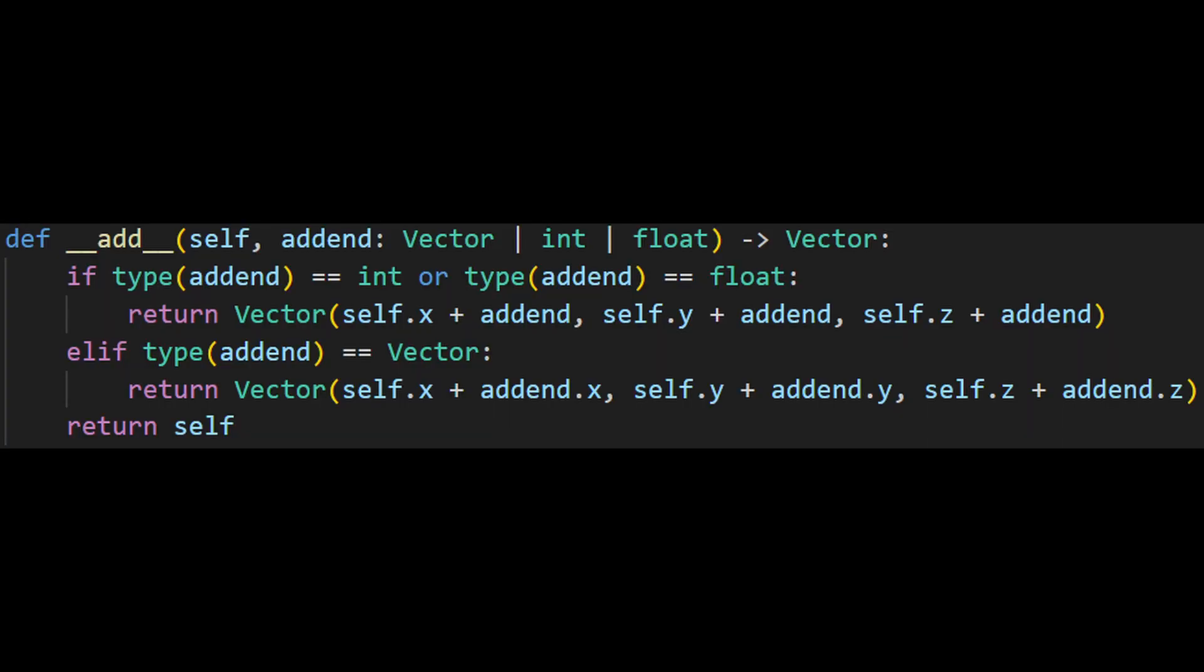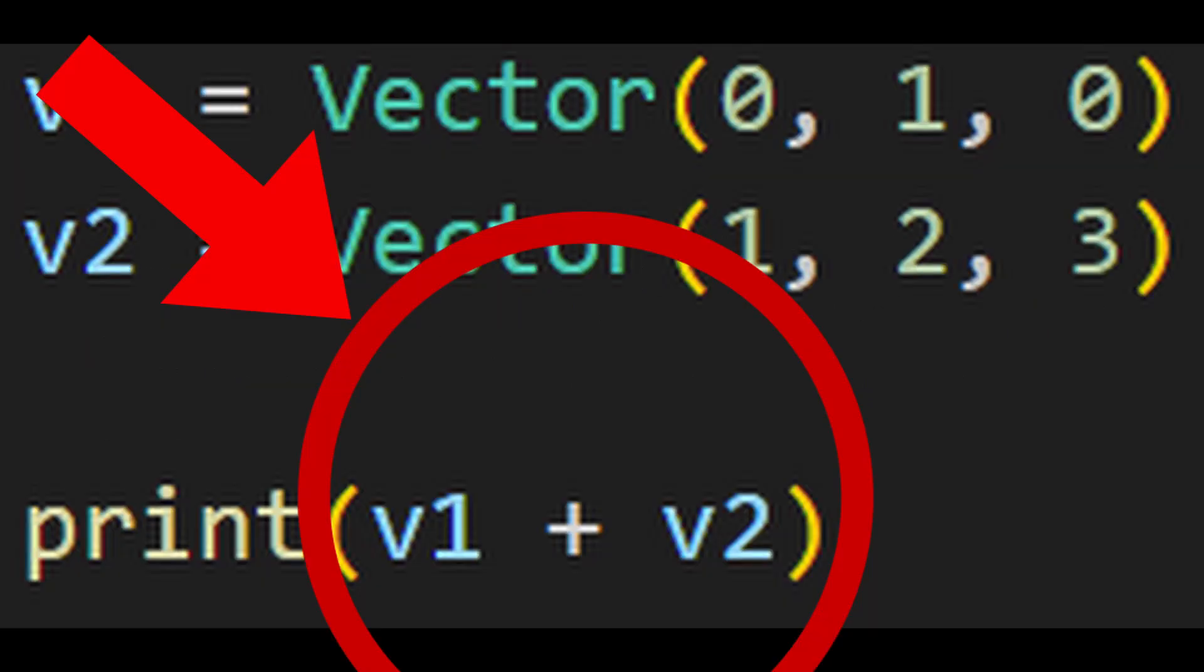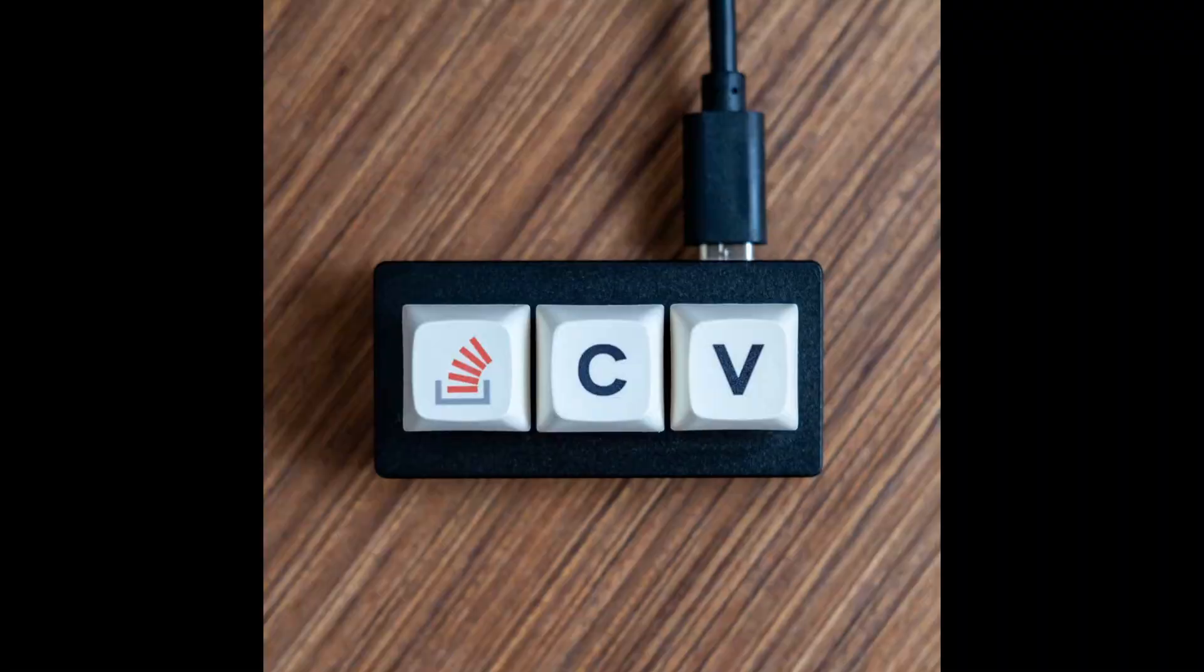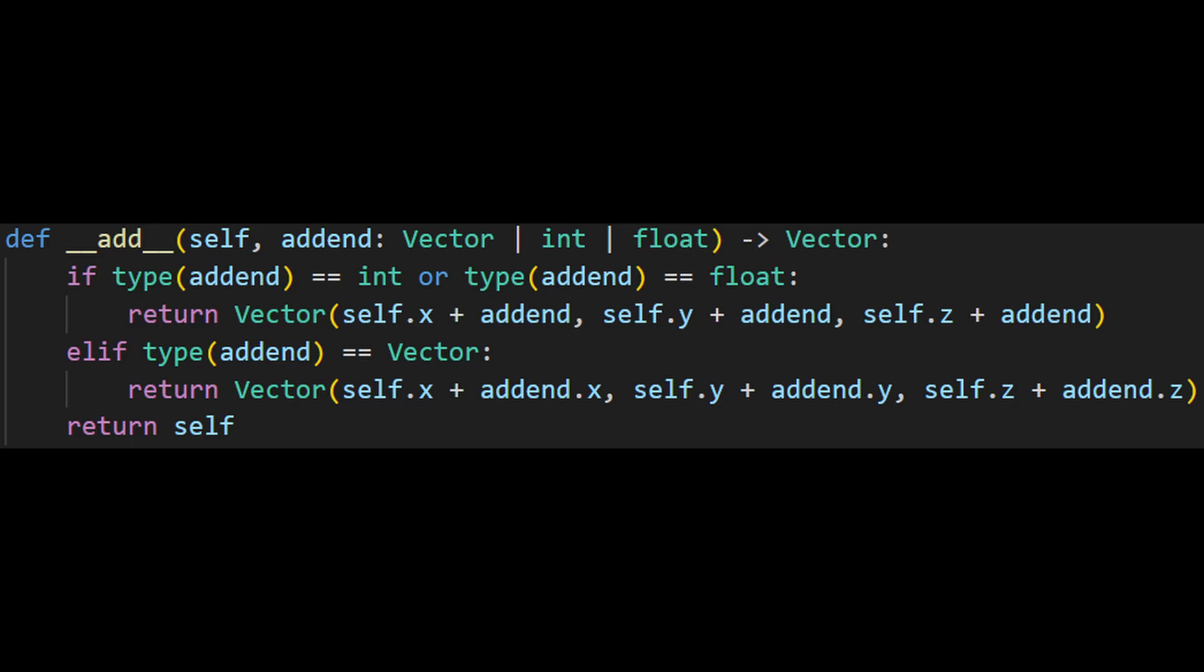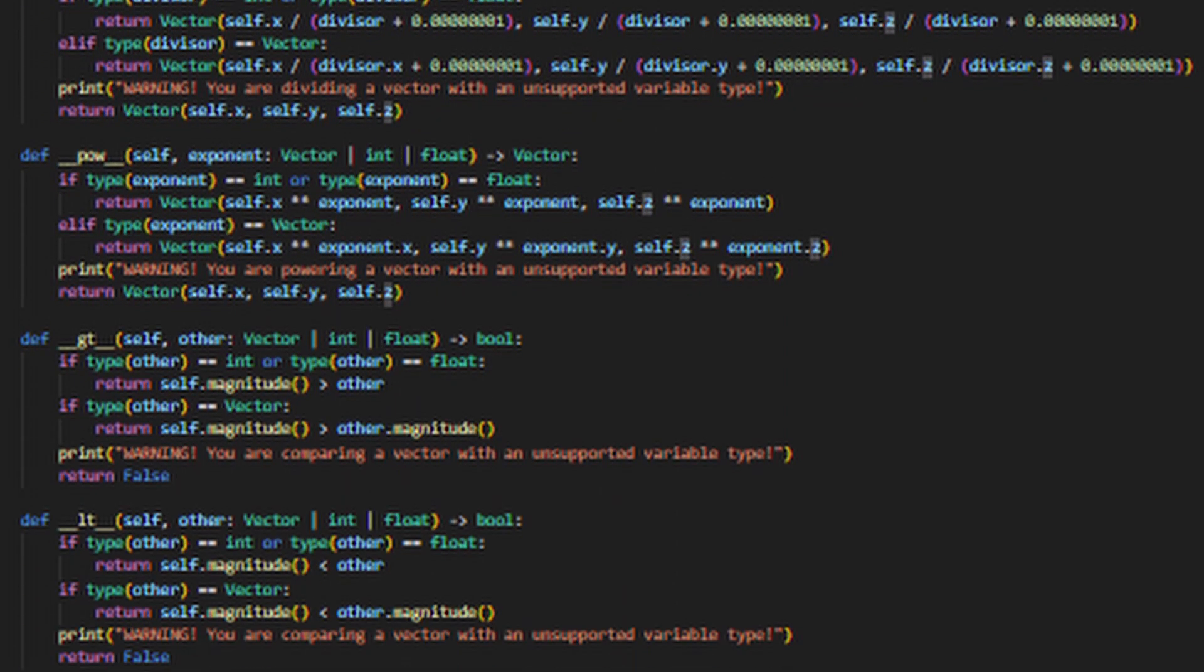For example, the dunder add method lets you write your own functionality for when the add operation is done to the class. Now we just need to copy and paste that method a few more times for more operations and you're good.